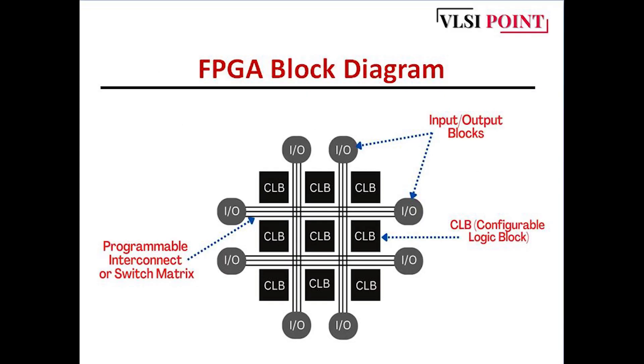This is how the FPGA block diagram looks like. We have CLB, which stands for configurable logic block. Then we have the IO, the input output blocks, and the programmable interconnects, also called the switch matrix. One by one we will understand each and every element. These are the FPGA blocks.